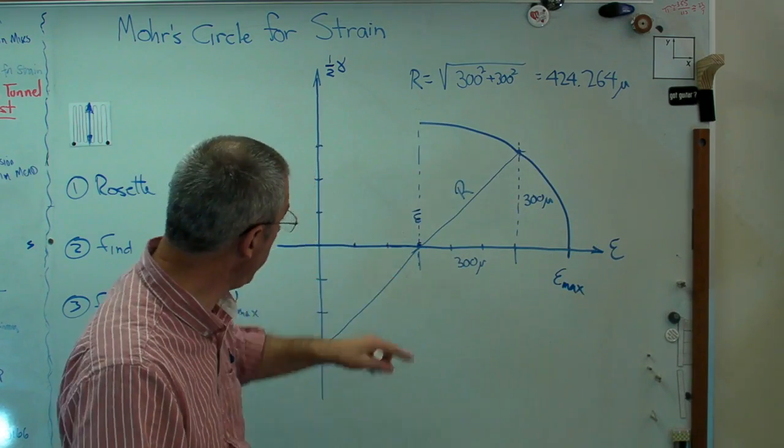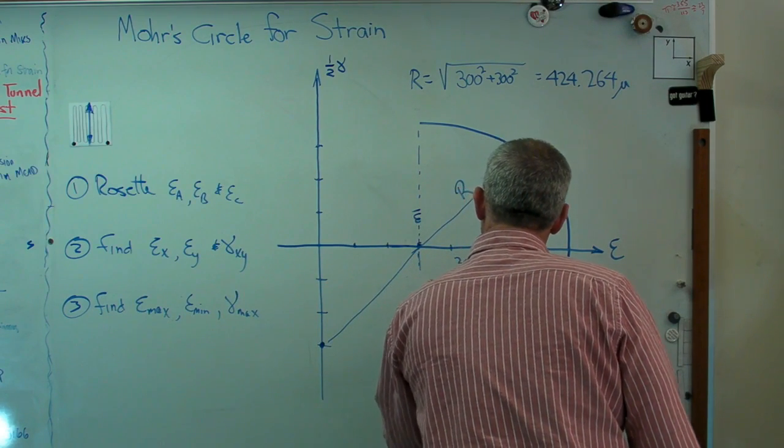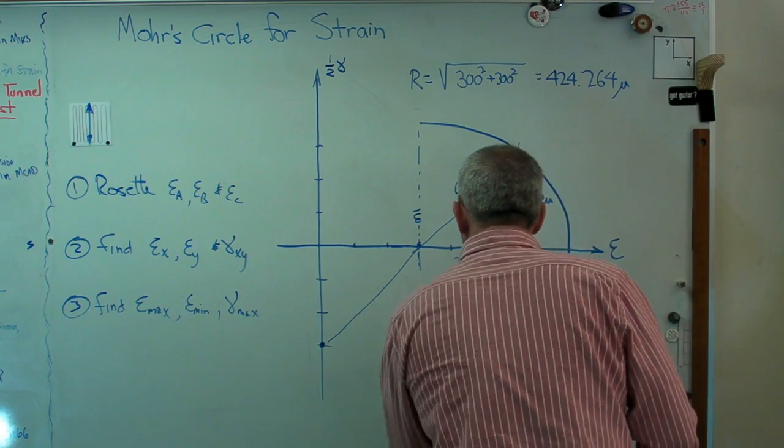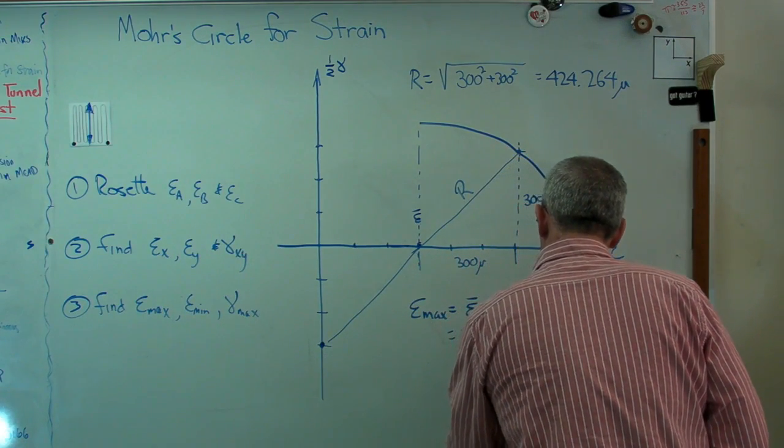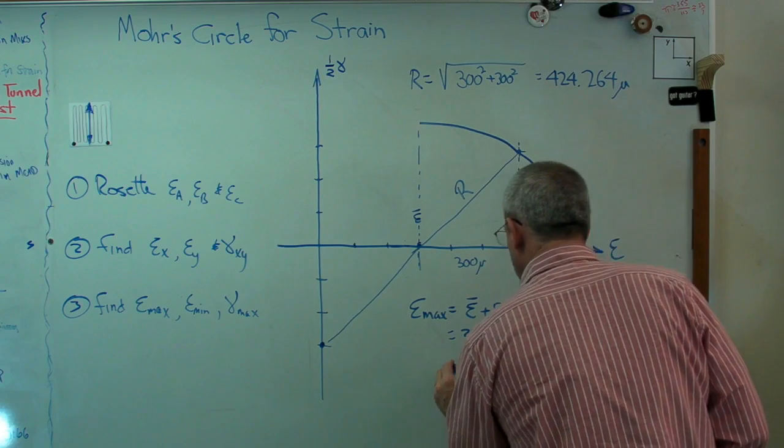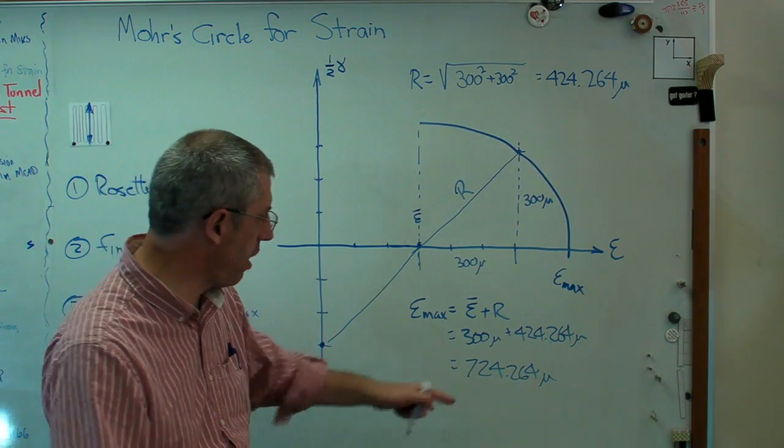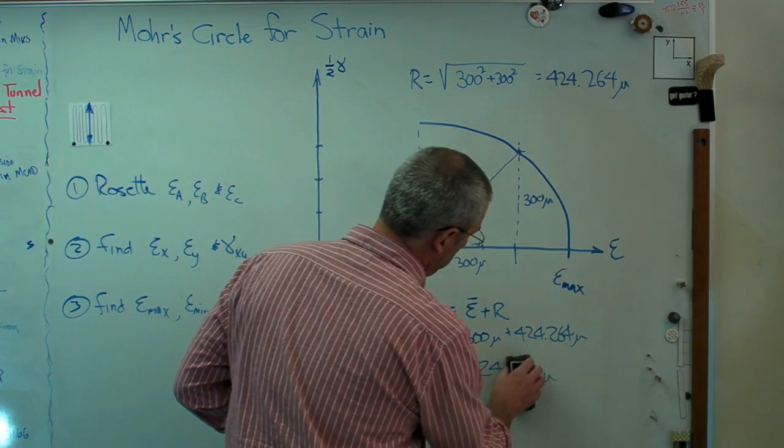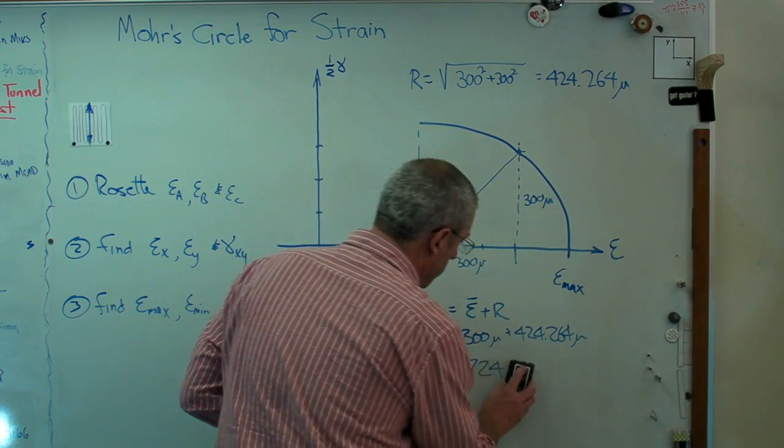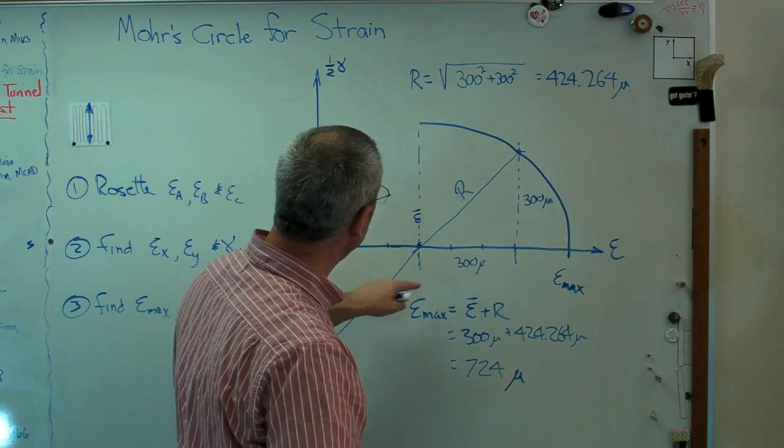This point here is epsilon max. Epsilon max must be the mean strain plus the radius. Let's do that. Epsilon bar plus R. And that's going to be 300 micro plus 424.264 micro and 724.264. Now that's an awful lot of significant figures to use. We're already talking about microstrain. If I had my students report it, I'd probably have them do just 724. Three significant figures is certainly fine here.